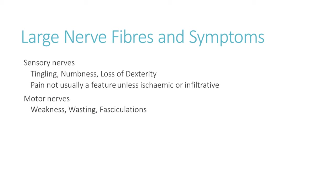It's useful to consider the symptoms patients can have, dividing them between sensory and motor symptoms. Sensory nerves will cause tingling, numbness, and loss of dexterity. Pain is not usually a feature unless there's an ischemic or infiltrative process — so always be wary of progressive weakness that is very painful, as that might be something malignant. Motor nerve impairment leads to weakness, wasting of the muscles, and fasciculations.